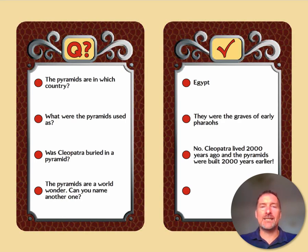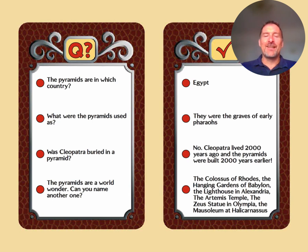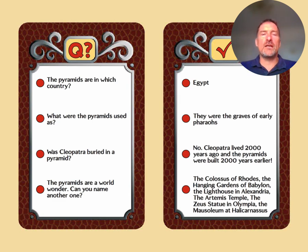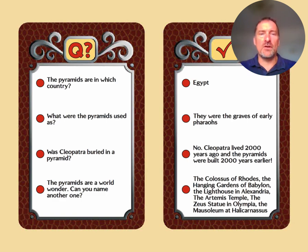Here's a list of the Seven Wonders of the World: the Colossus of Rhodes, the Hanging Gardens of Babylon, the Lighthouse in Alexandria, the Artemis Temple, the Zeus statue in Olympia, and the Mausoleum at Halicarnassus. Well done if you got one of those. Let's move on.